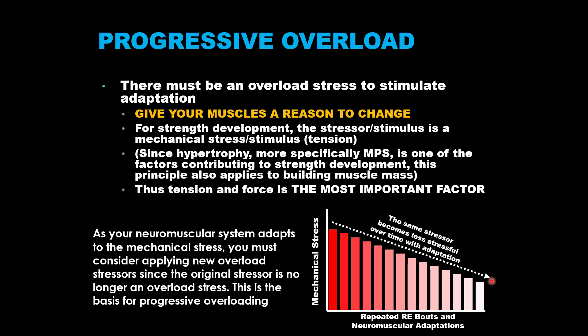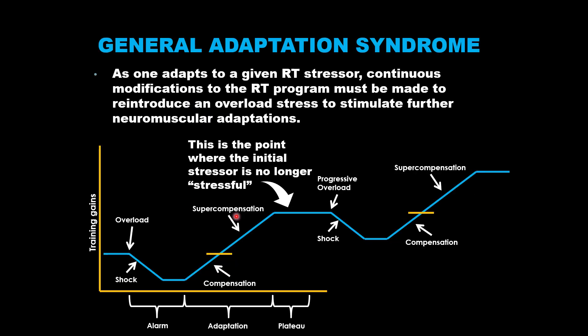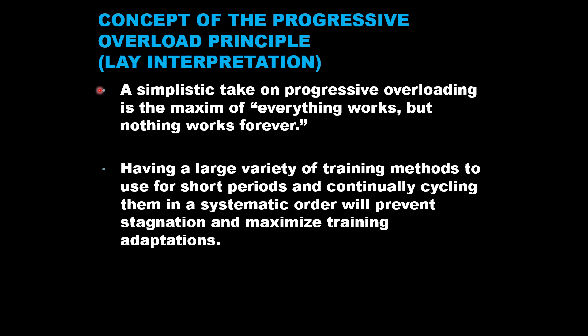When progressive overload is properly implemented, when a new overload stress is applied, the whole cycle of general adaptation syndrome continues while you continuously increase neuromuscular strength. The phases are re-established at a higher level of strength because you added an overload stressor progressive from the initial one. As a lay interpretation: everything works, but nothing works forever. Having a large variety of training methods used for short periods and continually cycling them in a systematic order will prevent stagnation and maximize training adaptations towards your desired goals.